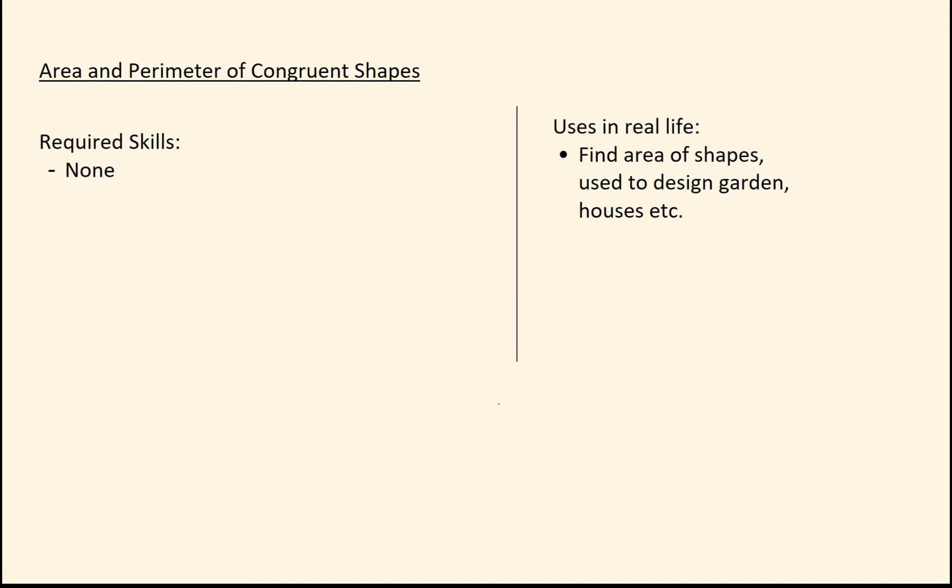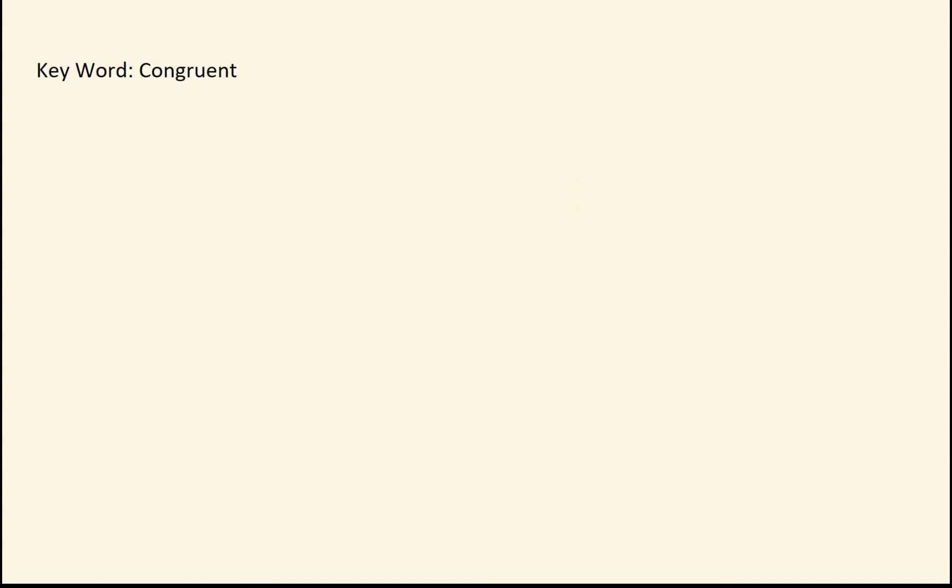Hi. Today we're going to take a look at the perimeter of congruent shapes. So the key word there is congruent. Whenever you see the word congruent, it's basically a way of saying that the shapes are the same or you have some identical shapes. It's just a fancy way of saying that.